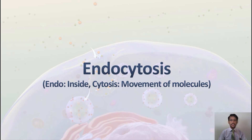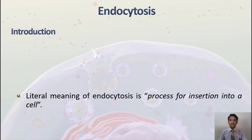Endocytosis is formed of two words: 'endo' meaning inside, and 'cytosis' meaning movement of molecules. So endocytosis refers to the process through which we can make something enter inside the cell. Whenever something needs to enter the cell, it can be done through the process of endocytosis. The literal meaning of endocytosis is 'process for insertion into a cell.'